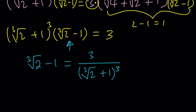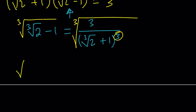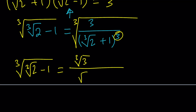Since we want to denest the cube root, let's take the cube root of both sides. The cube on the right disappears and we get ∛3 in the numerator. So: the cube root of (∛2 − 1) equals ∛3 divided by (∛2 + 1). That's the expression — I need parentheses because I'm going to multiply this by something next.